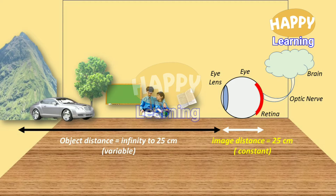U is a variable and V is a constant. Then, according to the U value, the eye lens F value is adjusted by the eye itself, which is called accommodation.